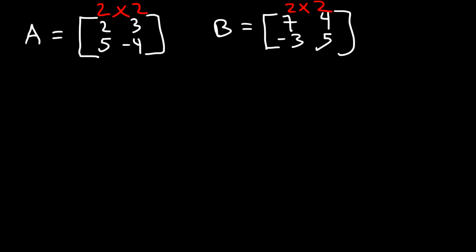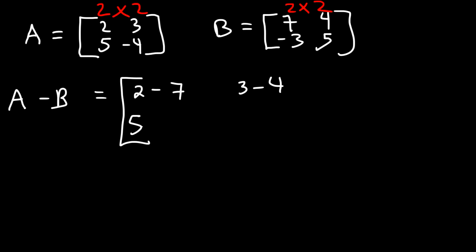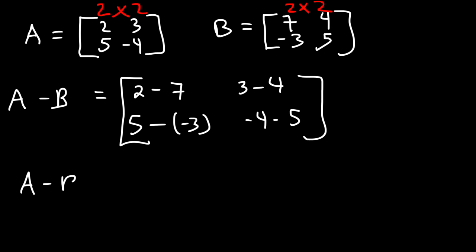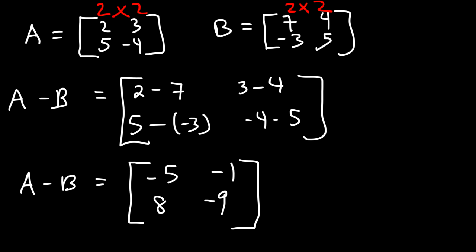What about subtracting two matrices? For A minus B, it's going to be 2 minus 7, 3 minus 4, 5 minus negative 3, and negative 4 minus 5. So A minus B gives us: 2 minus 7 is negative 5, 3 minus 4 is negative 1, 5 plus 3 is 8, and negative 4 minus 5 is negative 9. That's the difference between the two matrices.